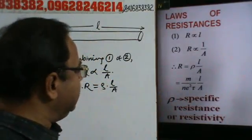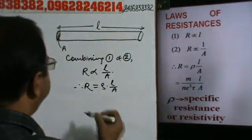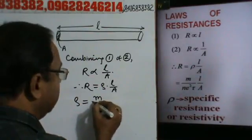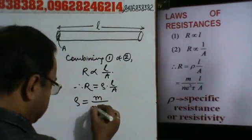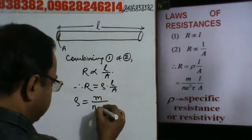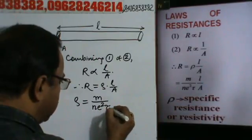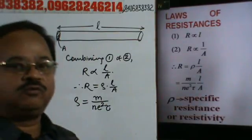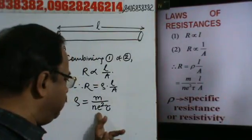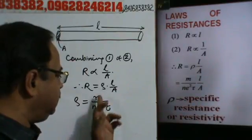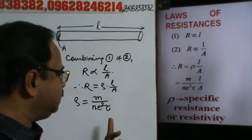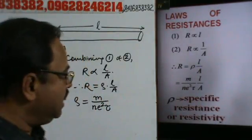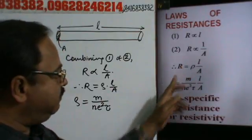Specifically, rho is equal to m divided by n e squared into tau, where N is number of electrons per unit volume of the conductor, E is electronic charge, M is mass of charge carrier, and tau is relaxation time.